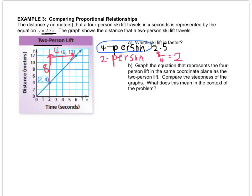Graph the equation that represents the four person lift in the same coordinate plane as the two person lift. So right on this graph. I guess I'll erase this. No, I can't. Compare the steepness of the graph. First we have to include the other line on here. What I learned is that this line will go through the point zero zero and it will also go through the point one comma two point five, because that's the slope. So I'll estimate it right here.